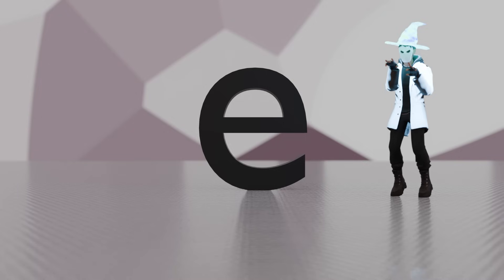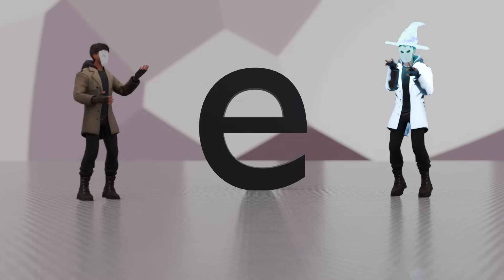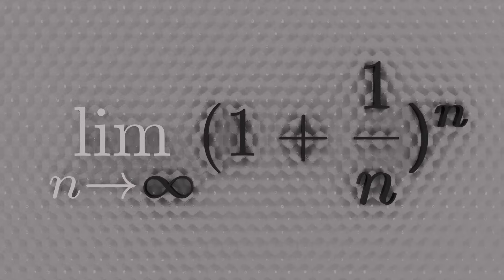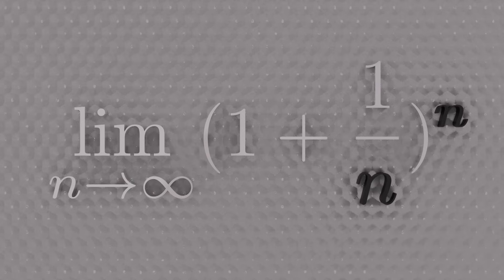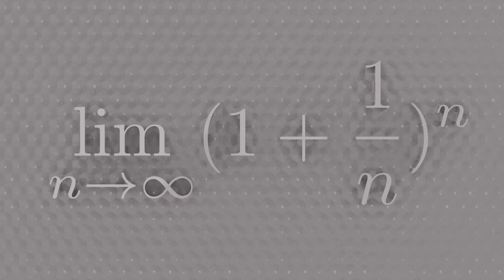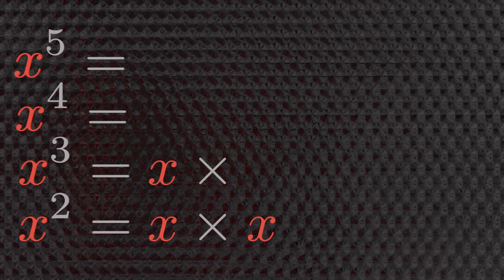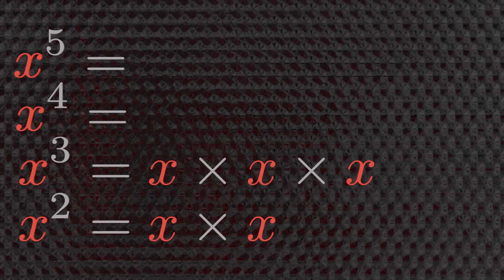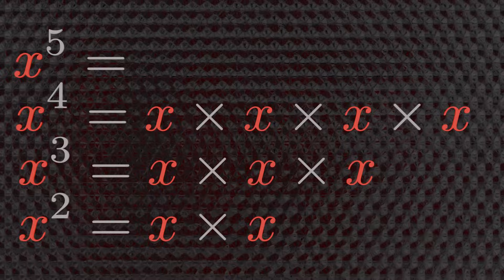Euler's number. Once again we'll start with the sorcerer's runes, and then move on to the actually reasonable stuff. Euler's number is defined like this: the limit as n approaches infinity of (1 + 1/n) to the nth power. Okay, so why is that? In order to answer that, we first have to ask: what is exponentiation? Not simple repeated multiplication — x squared is x times x, x cubed is x times x times x, and so on.